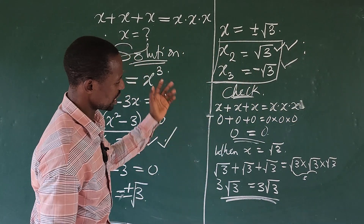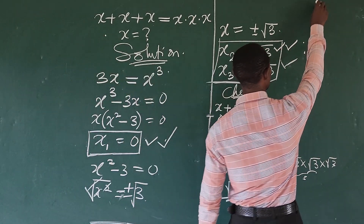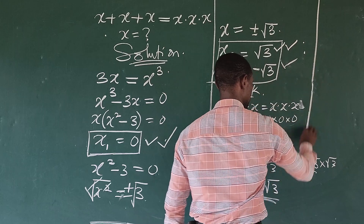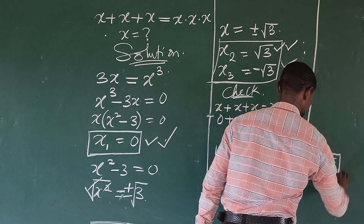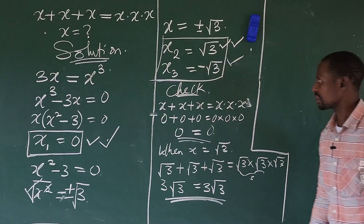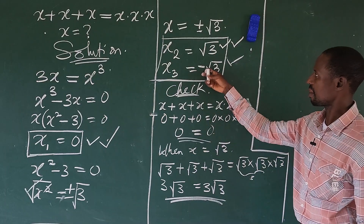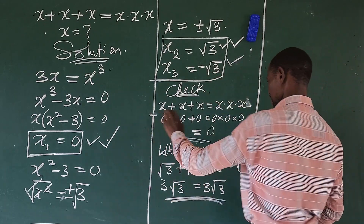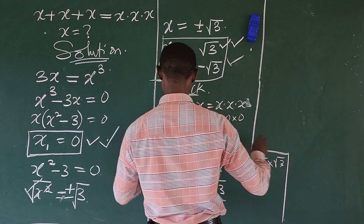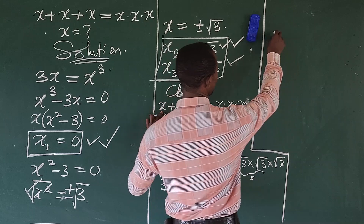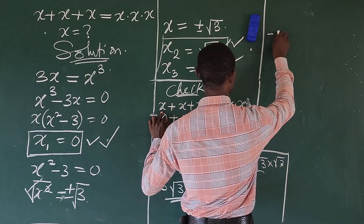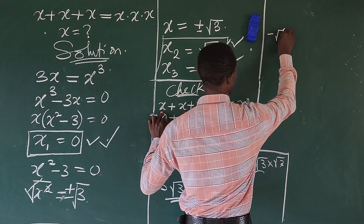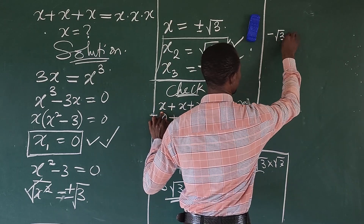So we check for the last one. Let's continue here. The last one is minus. So let's put in minus the square root of 3.